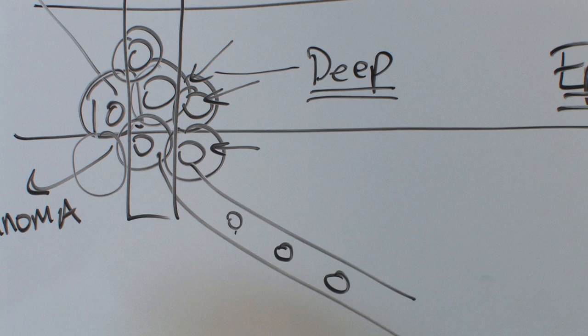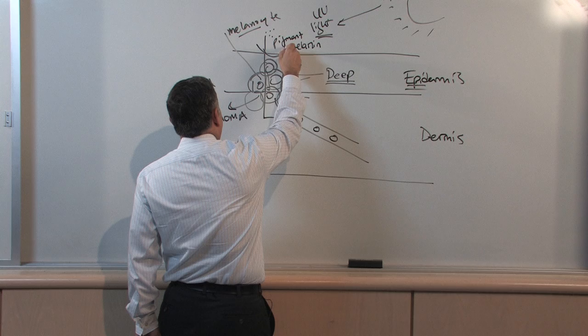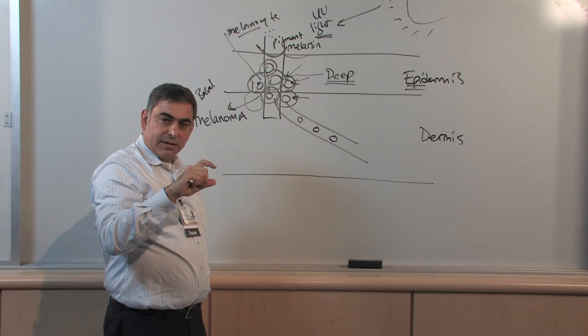The deeper a melanoma is, the more likely it's built a blood supply because it's bigger, it's actually formed this blood supply and can spread. It also tells us features like whether the tumor was ulcerated, i.e., it had broken through the skin and ulcerated.